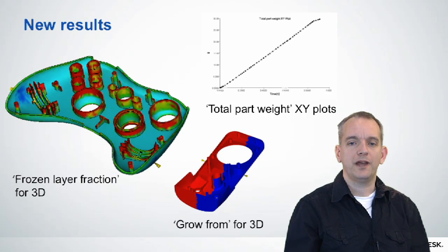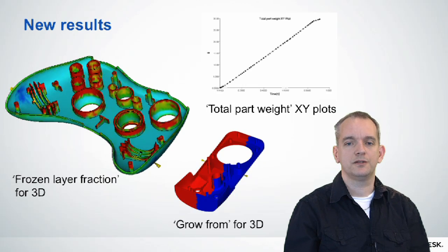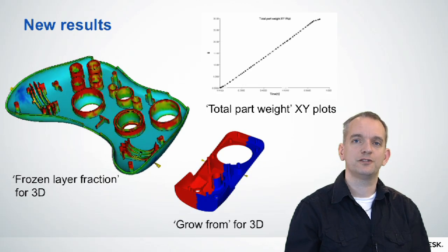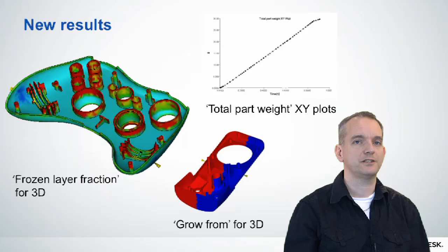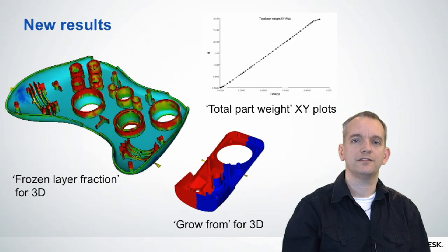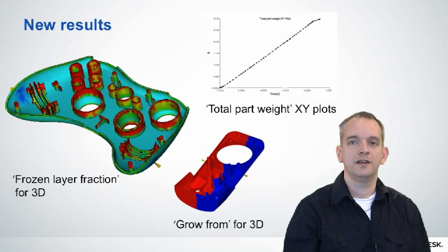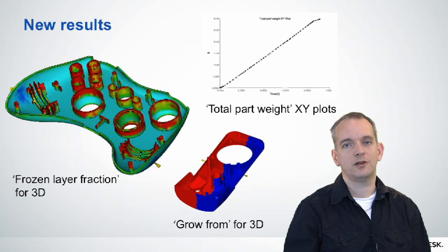Another area we added is some new results in XY plots — total part weight. This is very similar to what you actually do on an injection molding machine, where you look at the part weight over time to help you identify when a part is packed out properly.